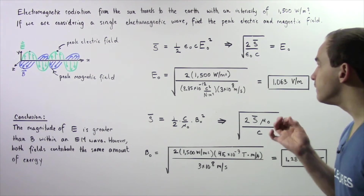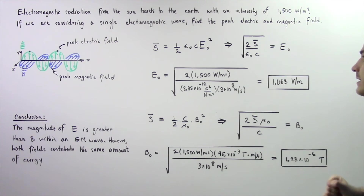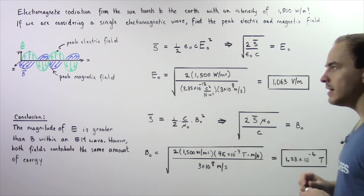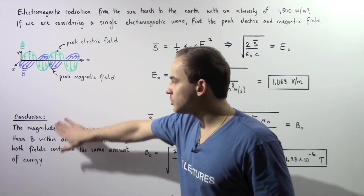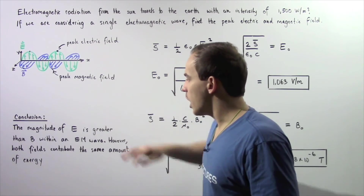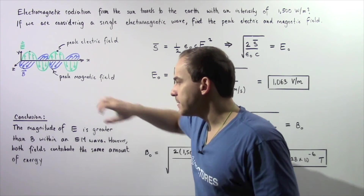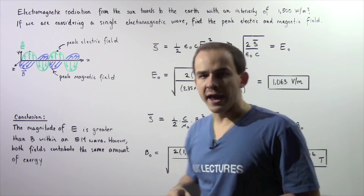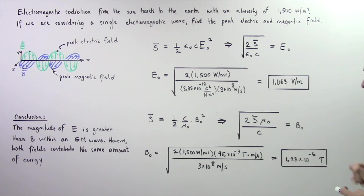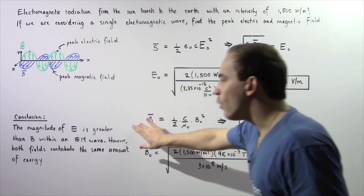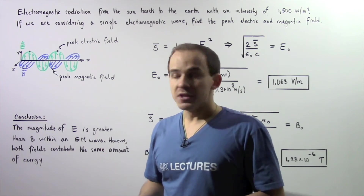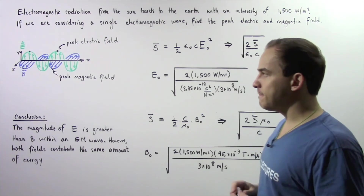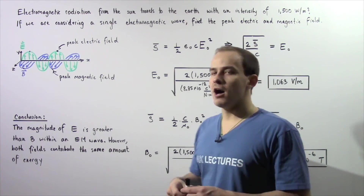Notice that even though the numerical value of the electric field is greater than that of the magnetic field, both fields carry the same exact quantity of energy. We conclude that the magnitude of E is greater than B within an electromagnetic wave — for example, 1,063 V/m is greater than 1.28×10⁻⁶ T — however, both the electric and magnetic fields contribute the same amount of energy.